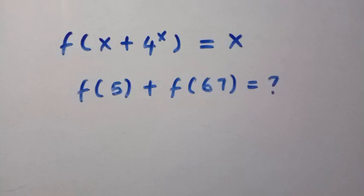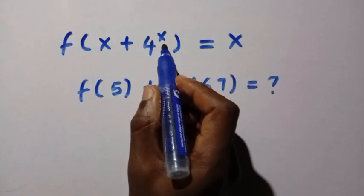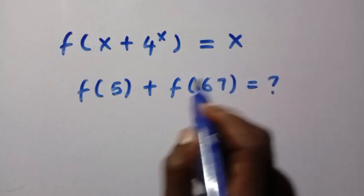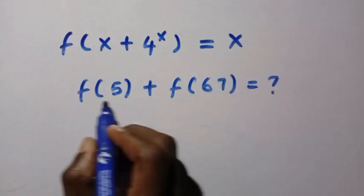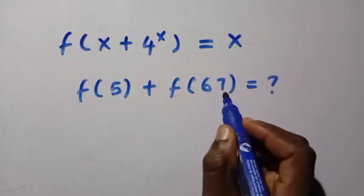Good day viewers, you are welcome. How to solve this functional equation: given that f(x + 4^x) = x, we are to find the sum f(5) + f(67).